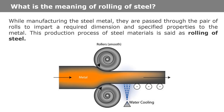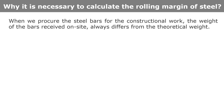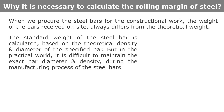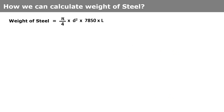Why is it necessary to calculate the rolling margin of steel? When we procure the steel bar for construction work, the weight of the bar received on site always differs from the theoretical weight. The standard weight of the steel bar is calculated based on the theoretical density and the diameter of the specified bar, but in the practical world it is difficult to maintain the exact bar diameter and density during the manufacturing process. The bars so produced may be underweight, standard weight, or overweight.